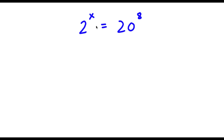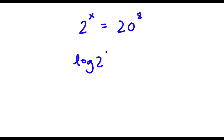Alright, so I have 2 to the power of x is equal to 20 to the power of 8. The first thing I'm going to do is take the log on both sides. So now I have log of 2 to the power of x is equal to log of 20 to the power of 8.